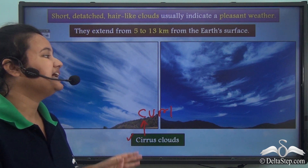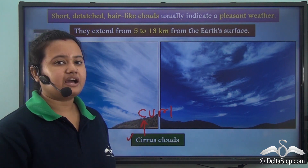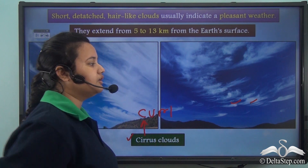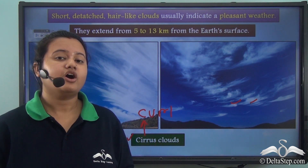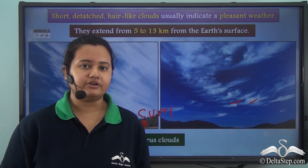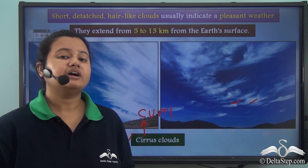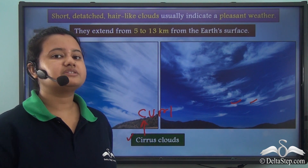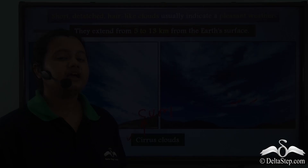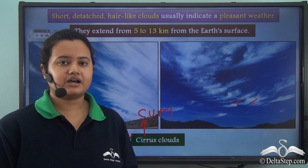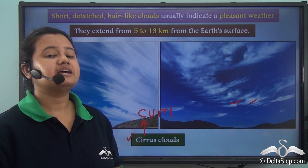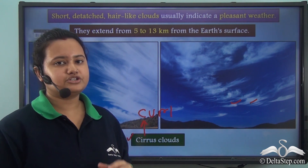These hair-like clouds that usually indicate pleasant weather are called Cirrus clouds. Cirrus in Latin means curl, that is a curl of hair. Since these clouds look like a curl of hair or have a hair-like appearance, they are known as Cirrus clouds. Cirrus clouds are located at some altitude.